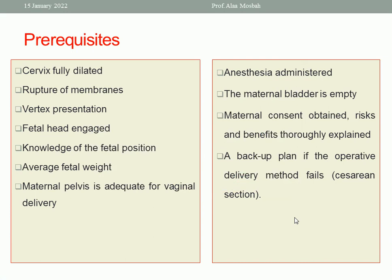What about the prerequisites? Of course, I need the cervix to be fully dilated, the baby presented by a vertex, the bladder is empty, membranes ruptured, head engaged, consent from the patient, fetal position well known, the baby has an average weight — not macrosomic. Maternal pelvis is adequate for vaginal delivery, anesthesia is ready, and I should have a backup plan. If this operative delivery fails, I want to do a caesarean section, so there must be an operative seat ready at any time.